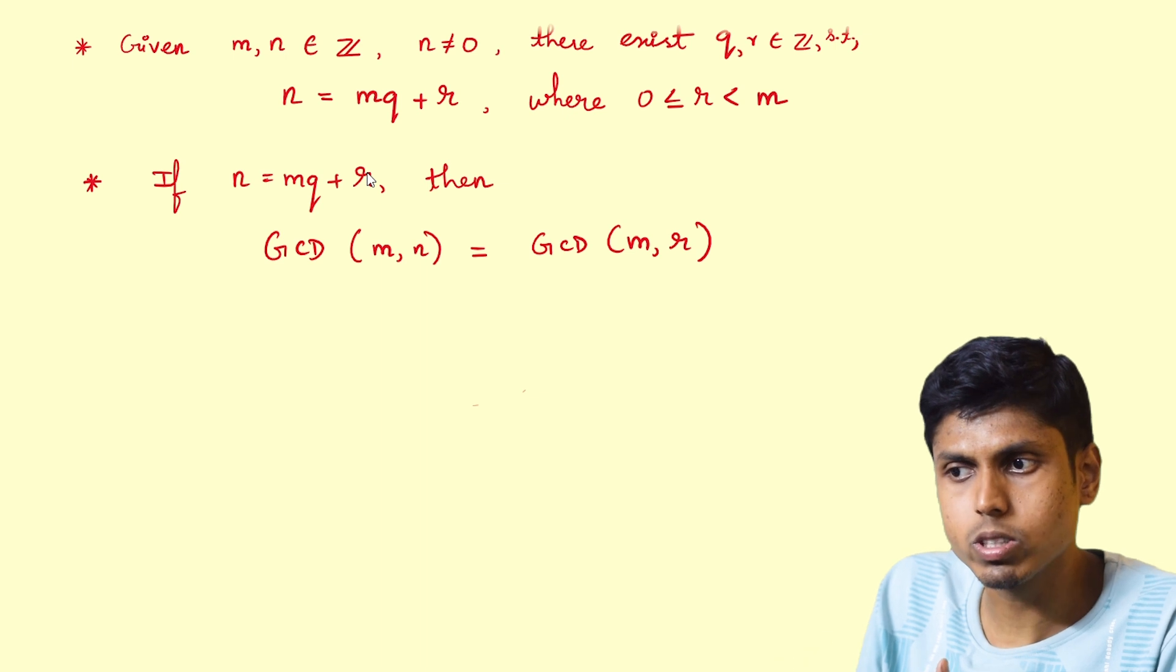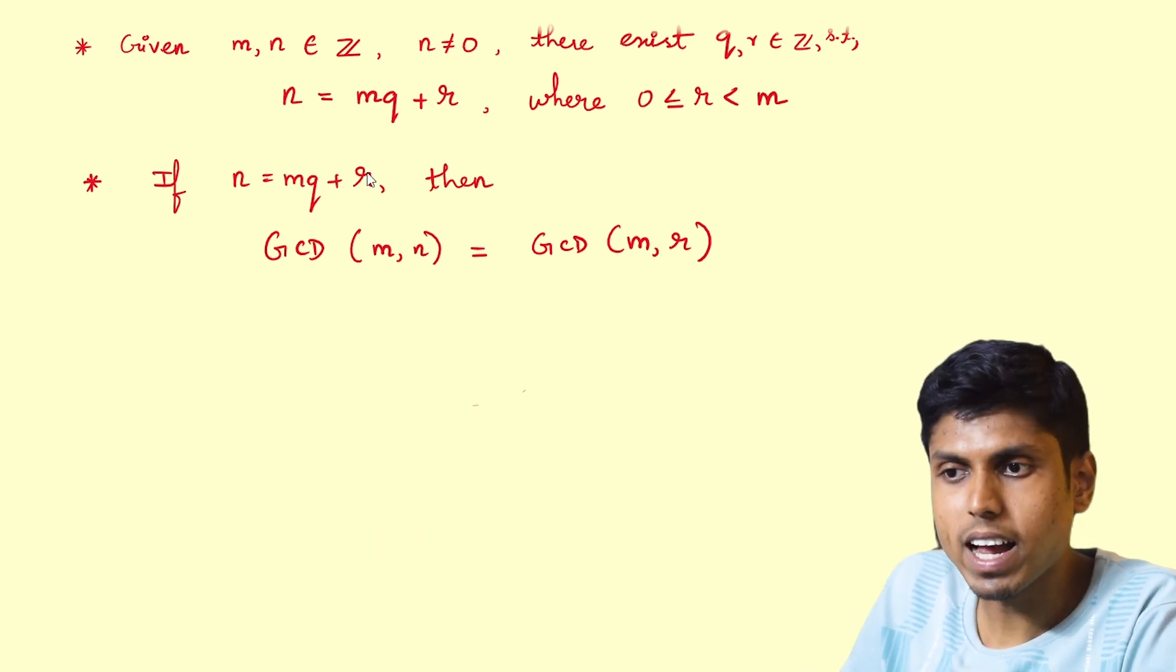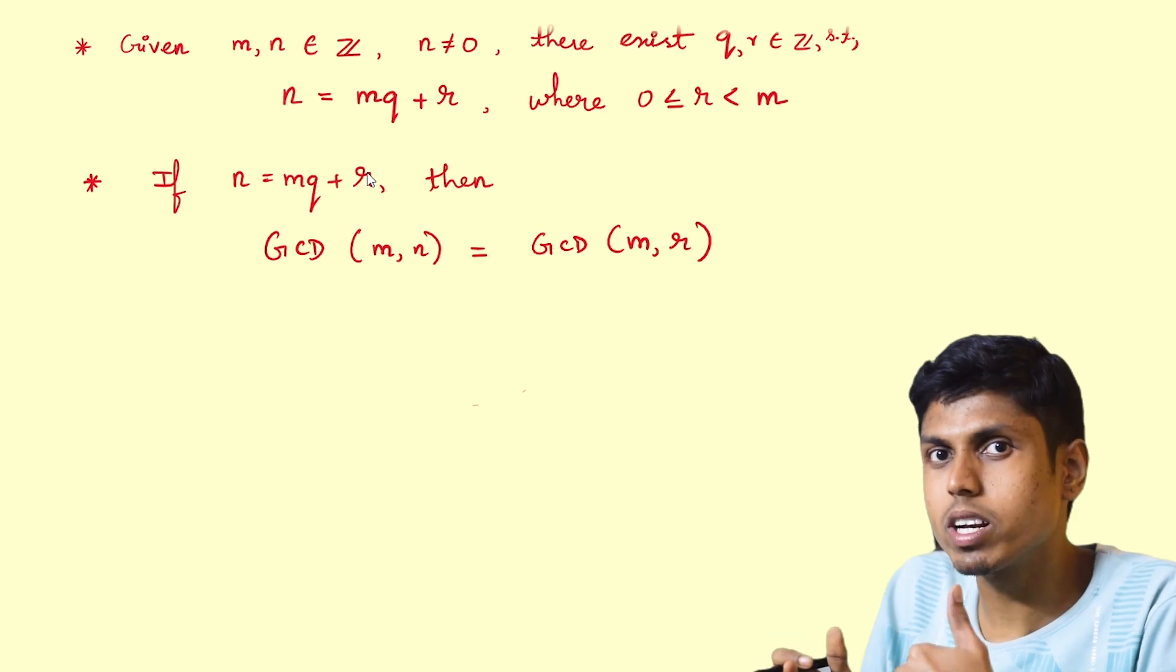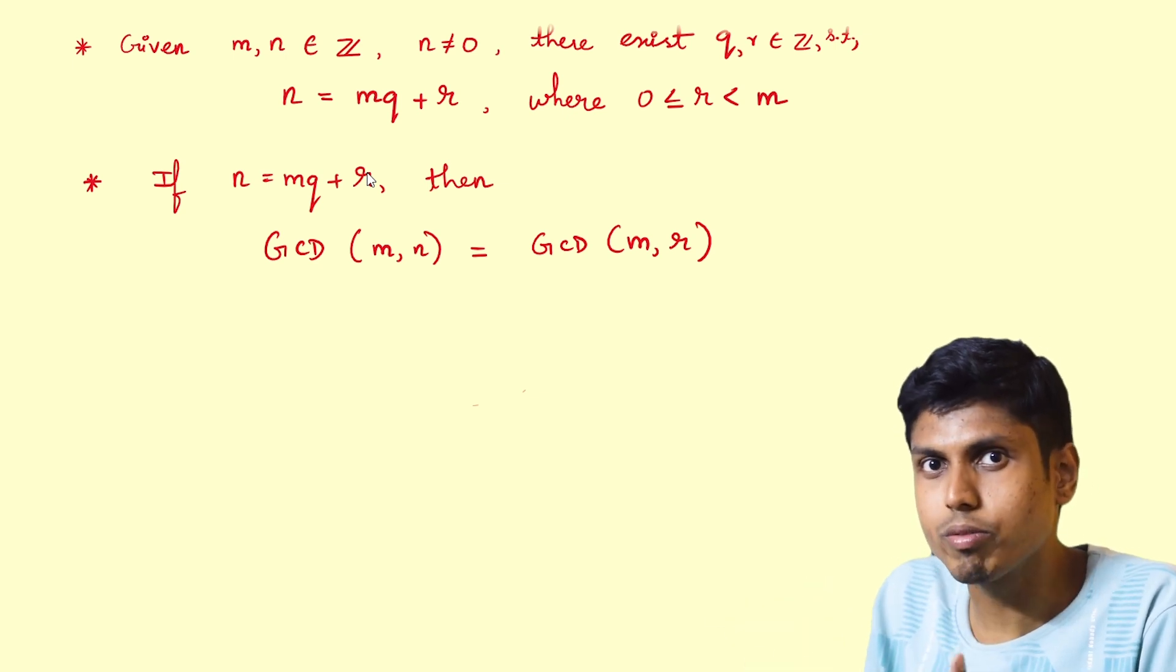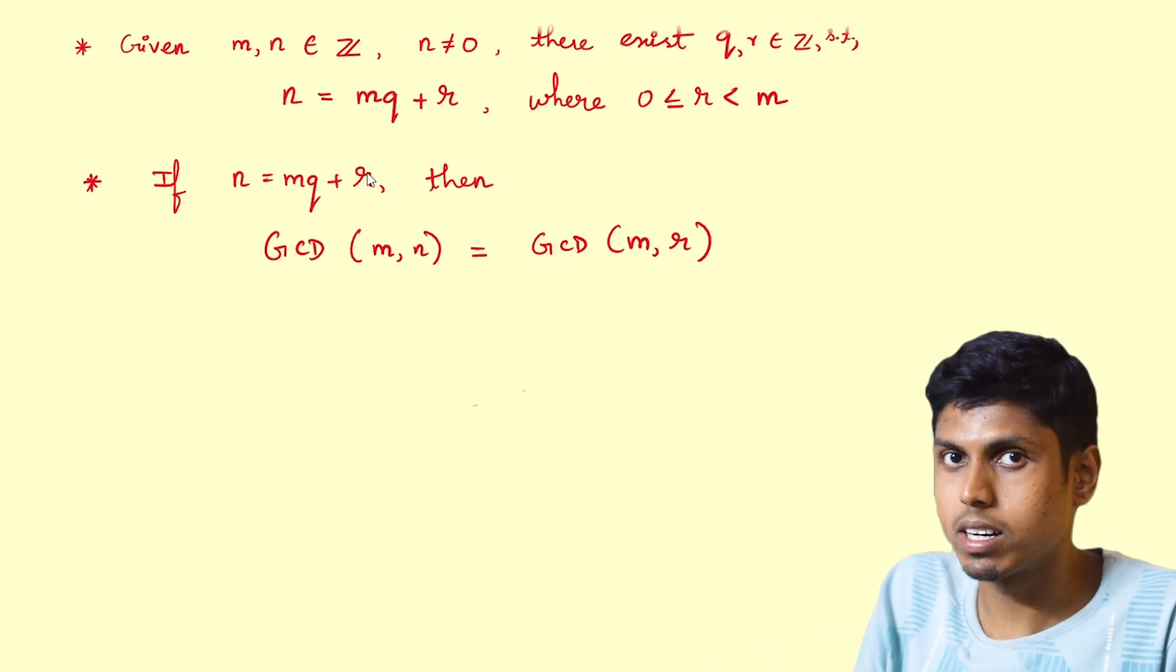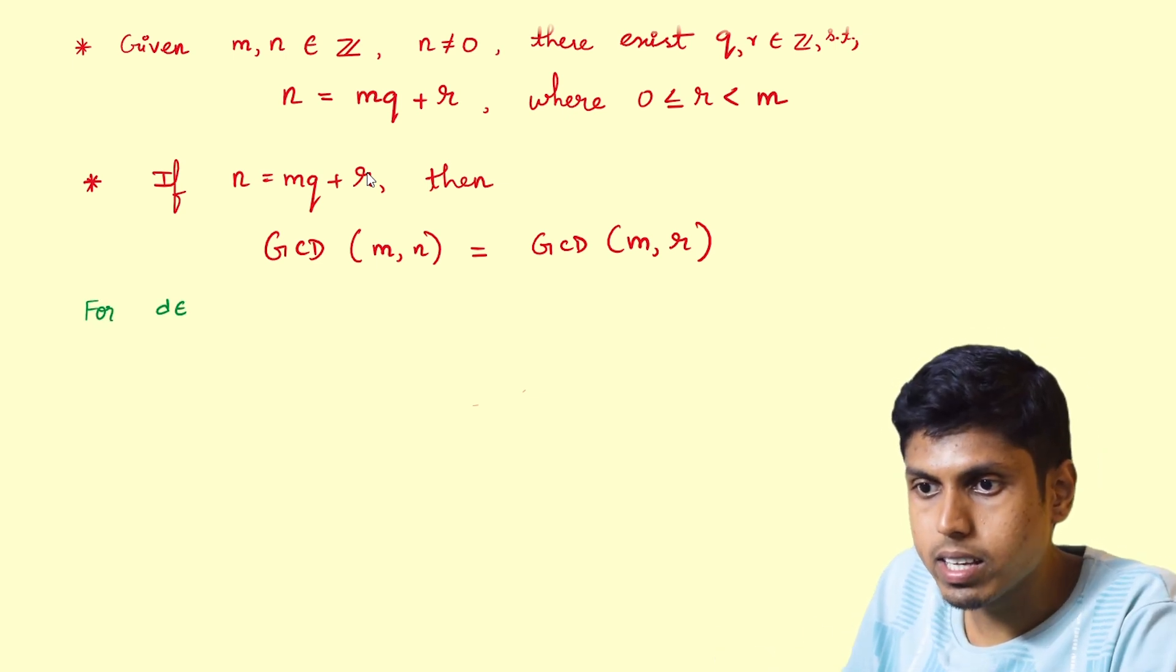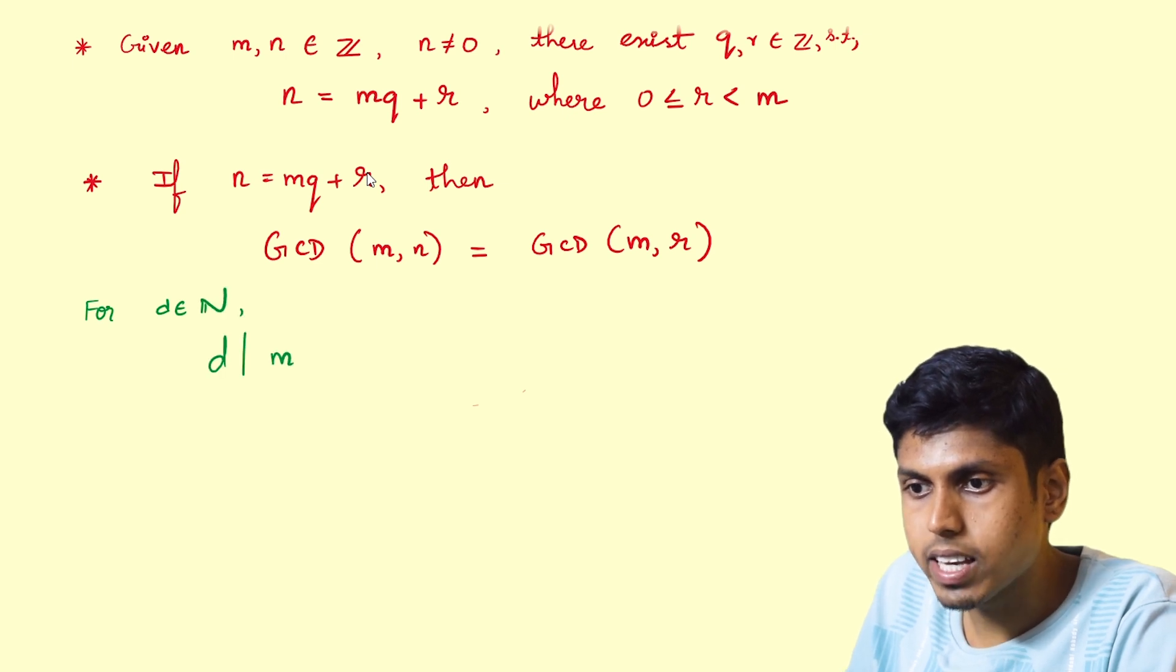How is this true? The fact is very simple to prove. We will prove that the set of all common divisors of m and n equals the set of all common divisors of m and r. Notice that if d is a natural number, then d divides m and d divides n imply d divides r.